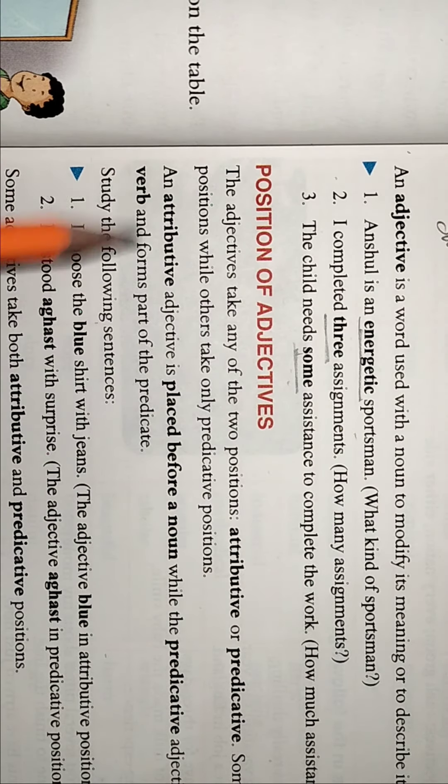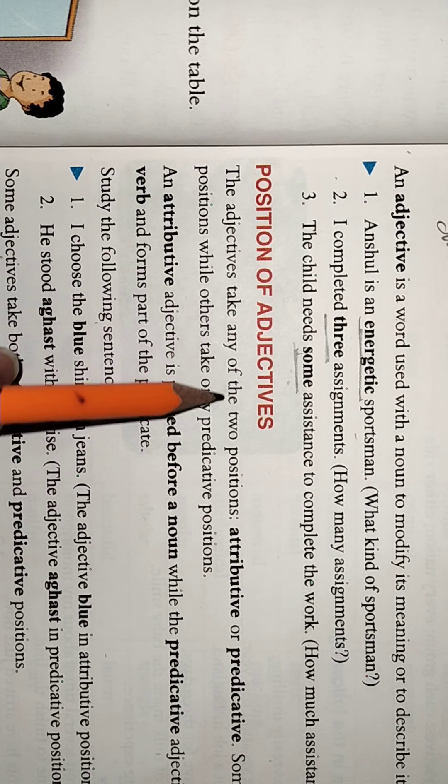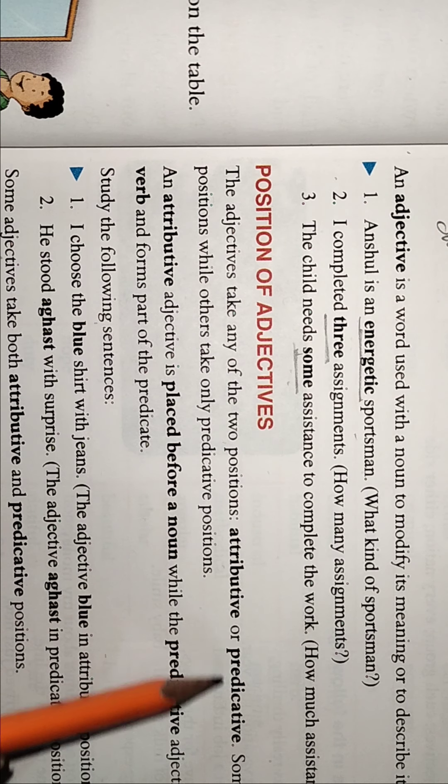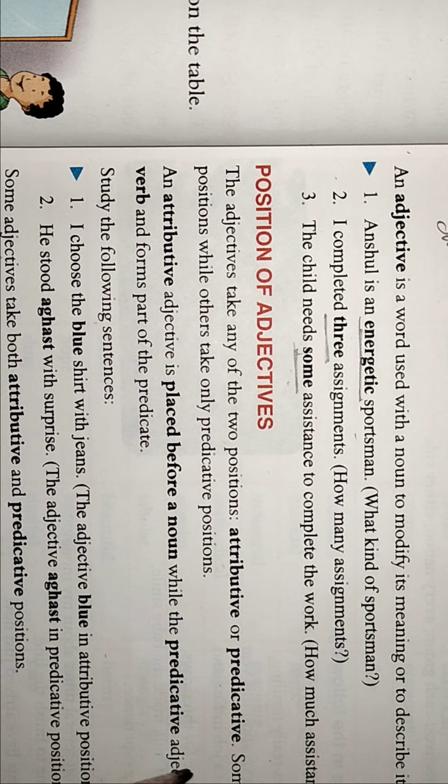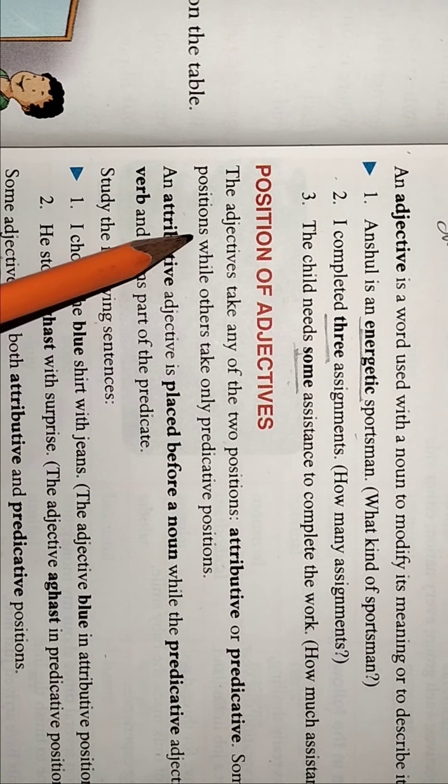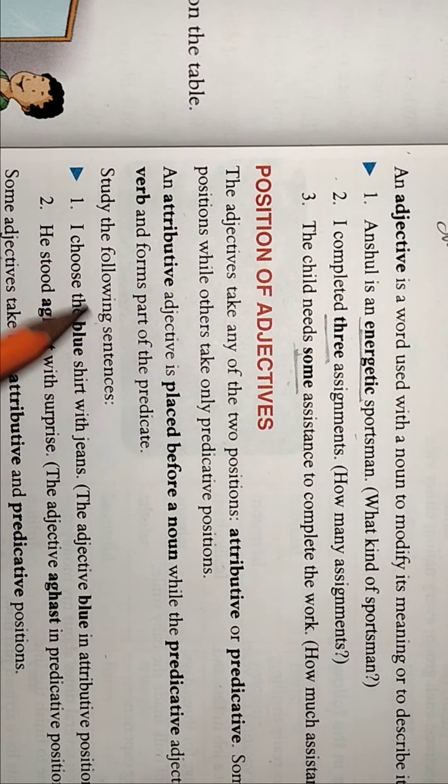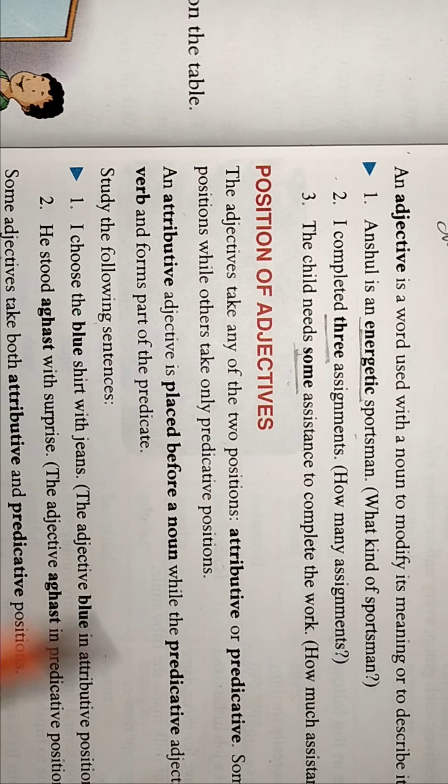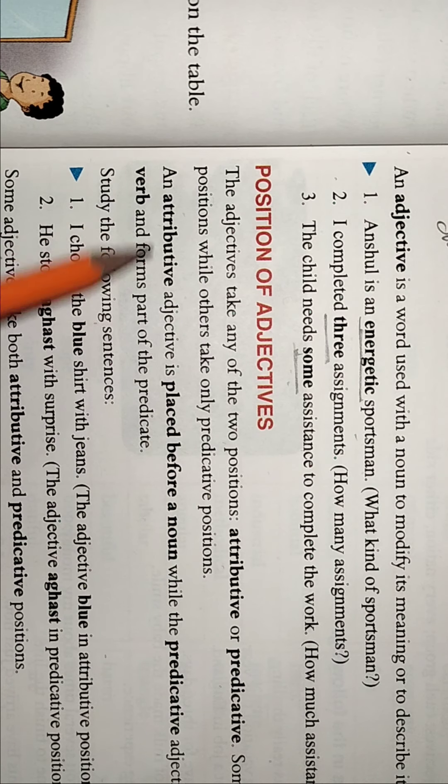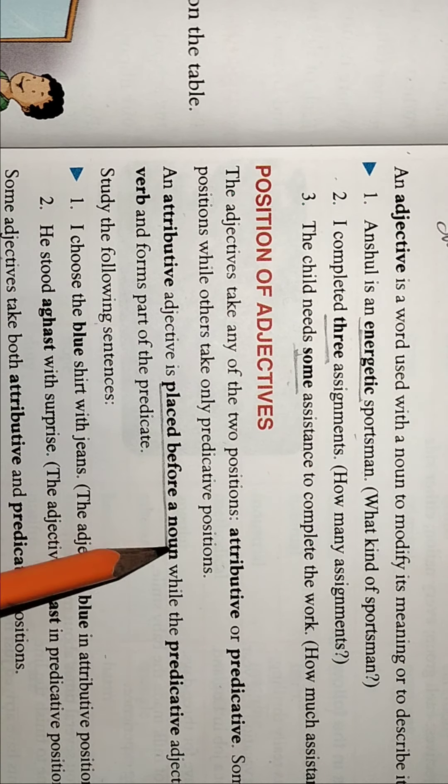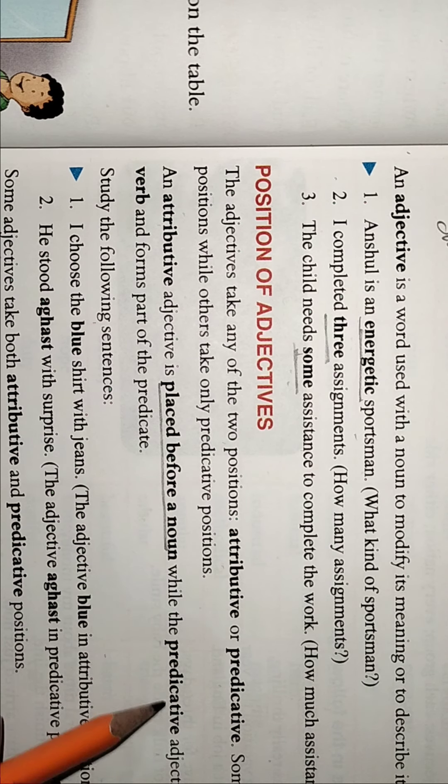Position of adjectives: adjectives take any of the two positions, attributive or predicative. Some take only attributive positions while others take predicative. Now what is attributive and predicative?